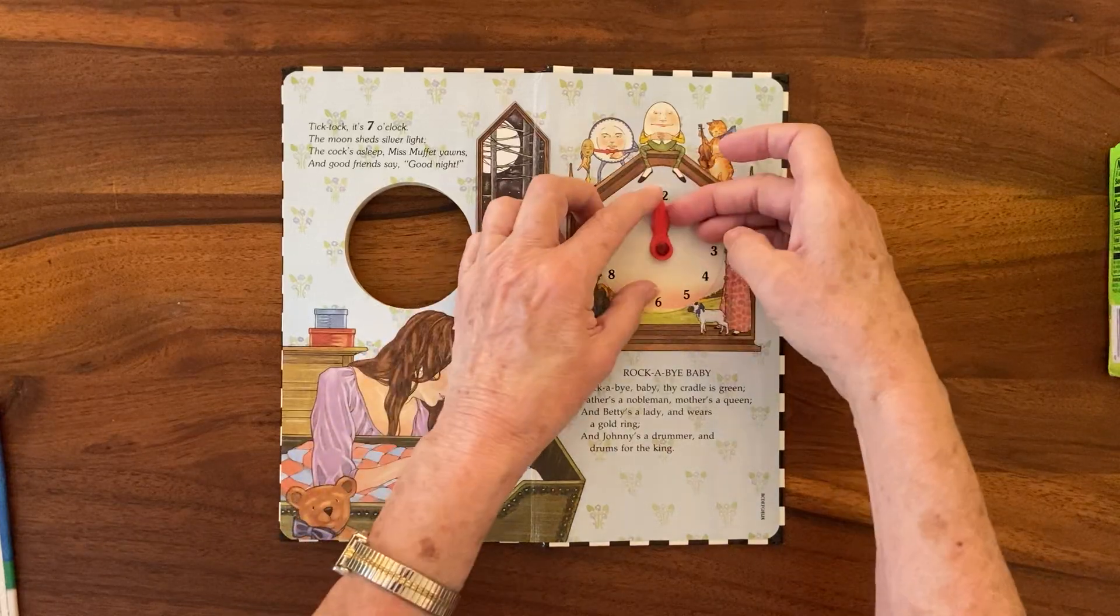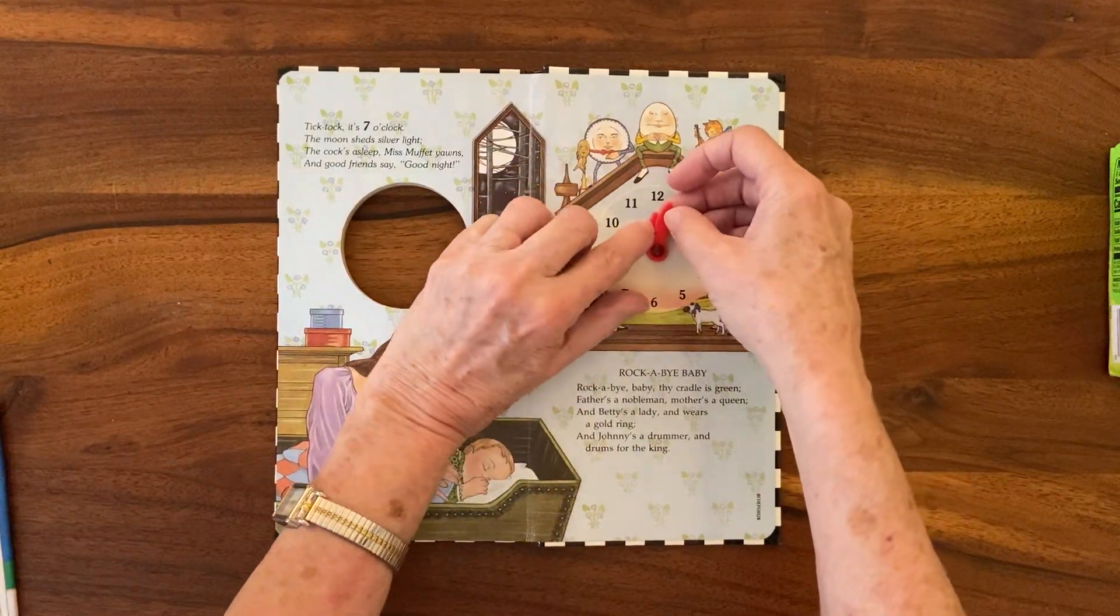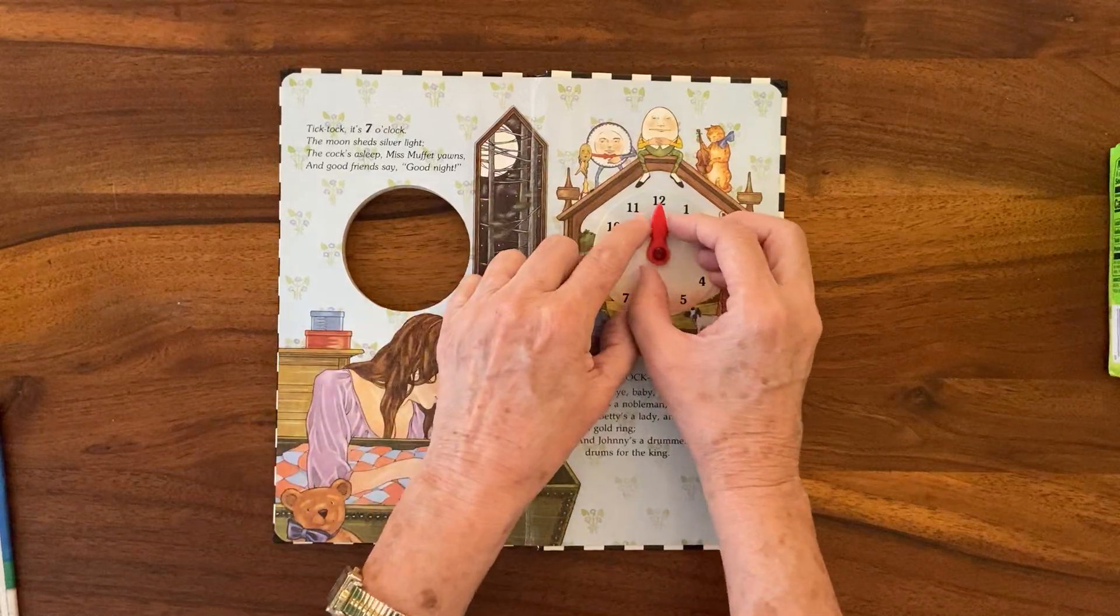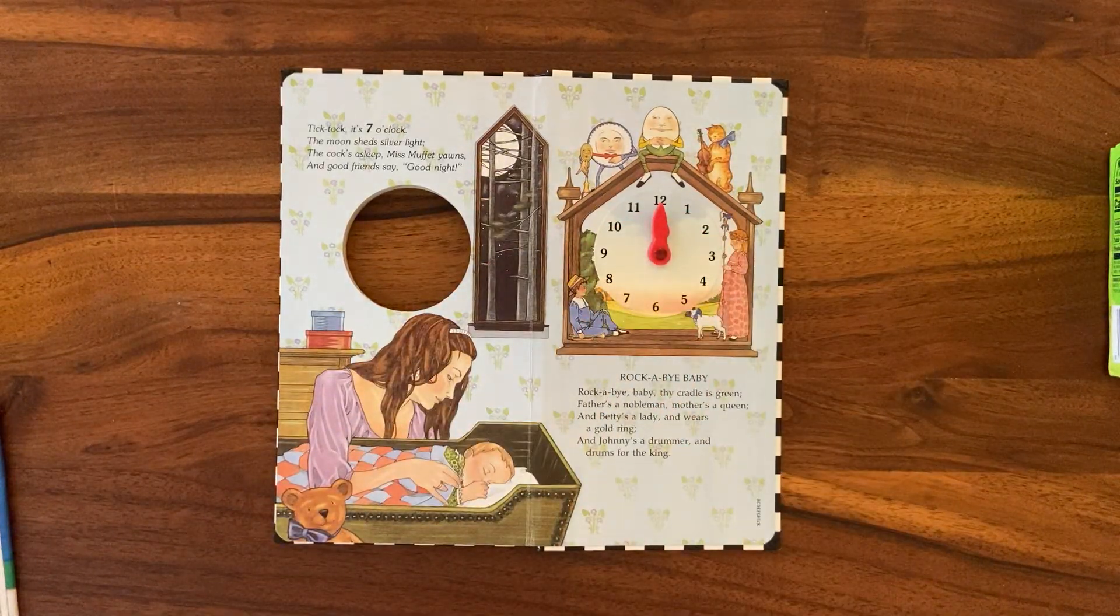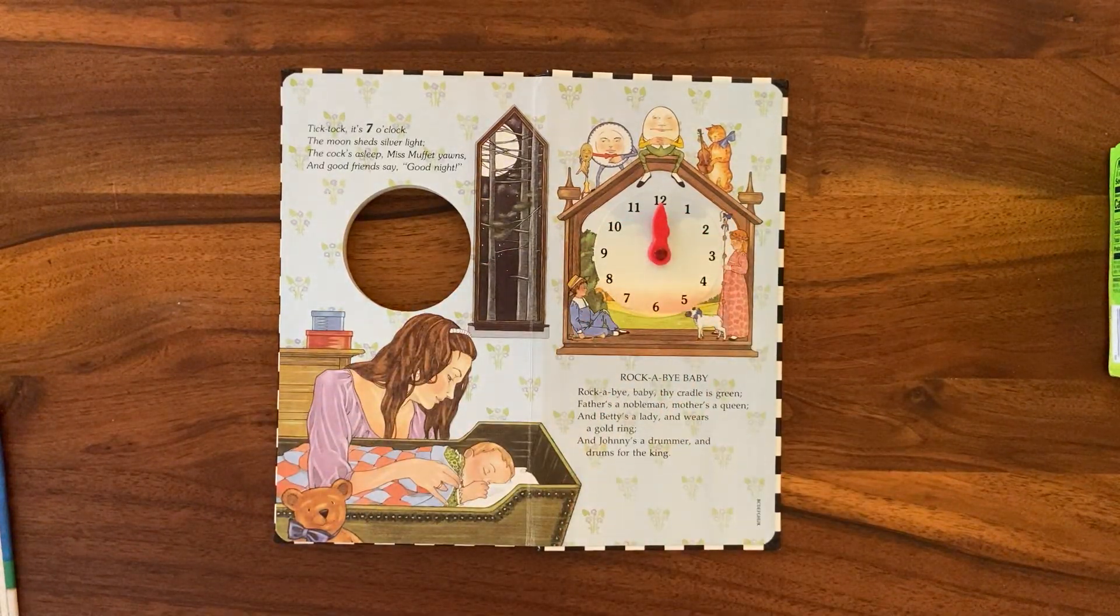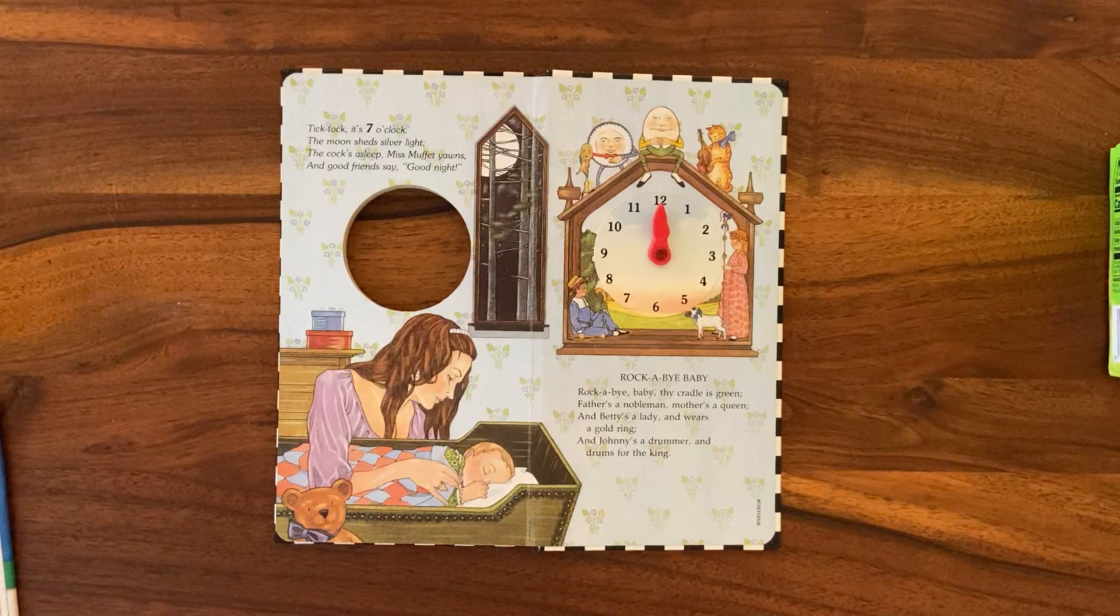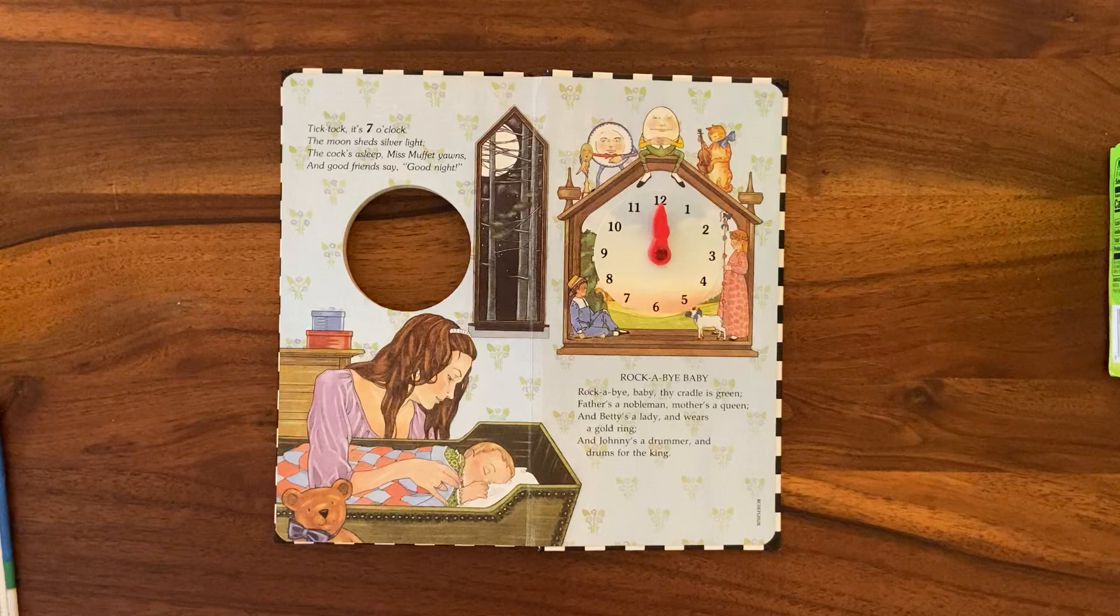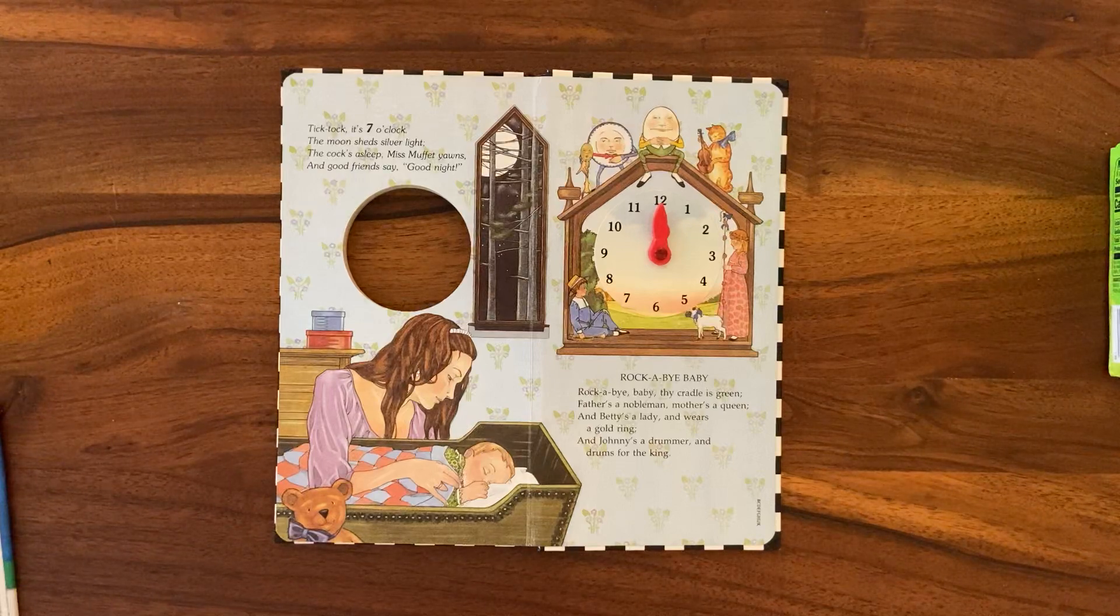With a clock, every hour, the minute hand goes around 360 degrees. That minute hand just went around 360 degrees—that's a full turn. So there are 360 degrees in a complete circle.